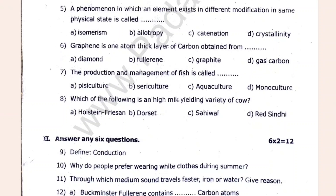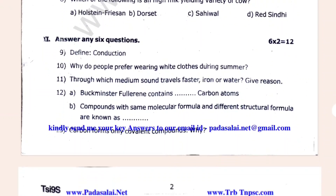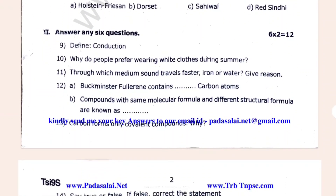2 marks. Define Conduction. Why do people prefer wearing white clothes during summer? White clothes reflect the sun. You can use white clothes to reflect sunlight. You can mark two lines.